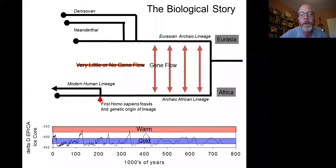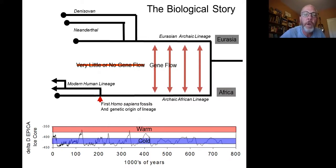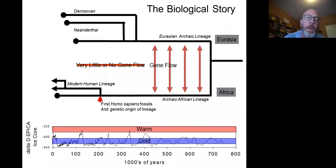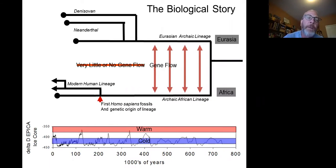The modern human lineage — the lineage that leads to everybody alive on the planet today — appears sometime between 200 and 150,000 years ago. We have concordant data on that from both the fossils and the genetics of modern humans. Then around 70,000 years ago, a very small founder population of Africans — modern humans — leaves Africa, probably through the Sinai, spreading east toward eastern Asia and west into Europe.